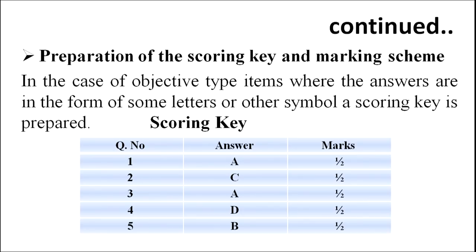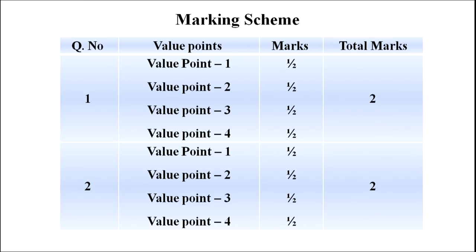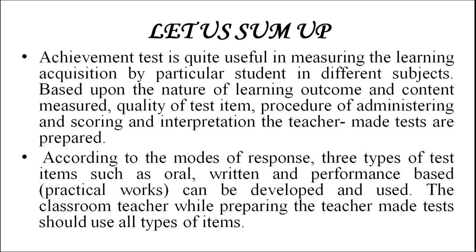The final step is preparation of the scoring key and marking scheme. In the case of objective type items where answers are in the form of letters or other symbols, a scoring key is prepared in which value scores and marks are assigned. In the case of short answer and essay type questions, the marking scheme is prepared. In preparing the marking scheme, the examiner lists out the value points to be credited and fixes the mark to be given to each value point — for objective type, subjective type, or short answer type, you assign a value and give marks accordingly.